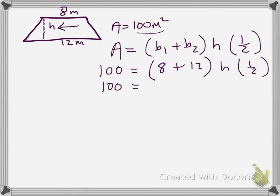So I'm going to start to combine things that I can combine. 8 plus 12 is 20, so now I have 20 times h times 1 half. We know with the commutative property that the order of multiplication does not matter. So even though this is written 20 times h times 1 half, you are welcome to shuffle things around. So that's what I'm going to do, and I'm going to shuffle so that the 20 and the 1 half are right next to each other.